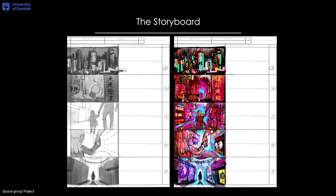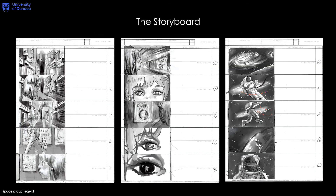The storyboard for the group project was handled by me and my classmate Mia. At first we decided to separate the work into sketching and coloring to keep significant styles in both. During the process there were a lot of changes in the storyboard and the coloring was no longer needed, so I did the final changes in the sketching, following Mia's design style.